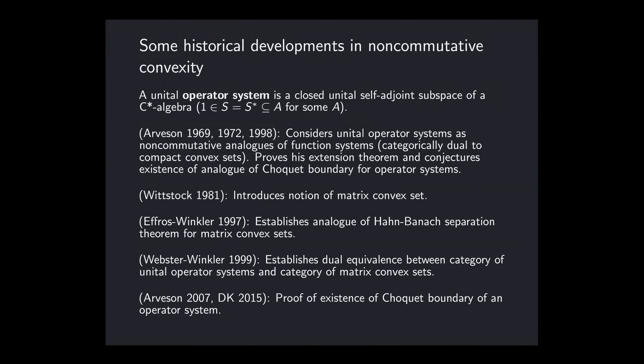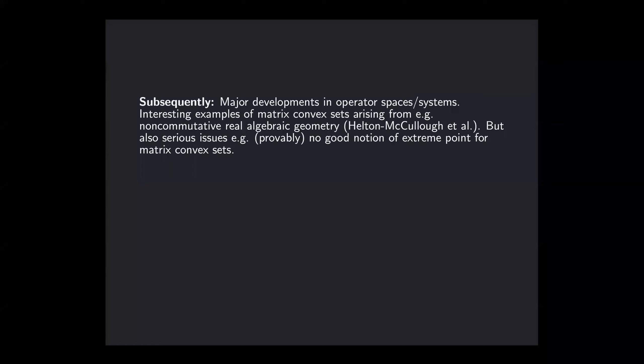Webster and Winkler, two students of Effros, in 1999 established that the category dual to operator systems is really a category of matrix convex sets. Meanwhile, on the operator system side, Arveson was able to finally establish his conjecture about the existence of the Choquet boundary of a non-commutative operator system in the separable case. A little while later, Ken Davidson and I established this in complete generality. This is the state of the art up to Arveson's 2007 JAMS paper.